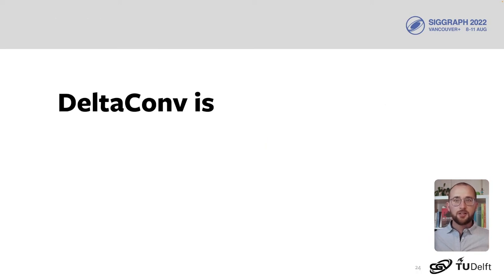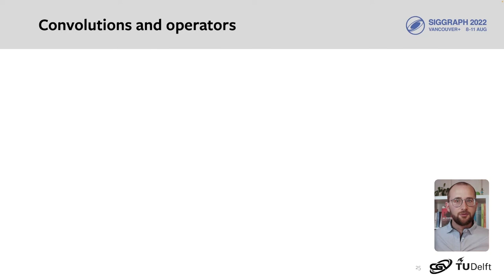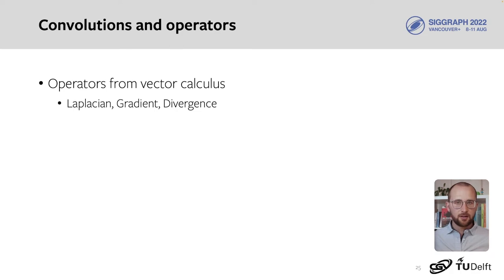In this talk, we're introducing DeltaConv, which is anisotropic and intrinsic, working directly on the surface. In DeltaConv, we shift the focus from designing filter kernels to using operators from vector calculus, such as the Laplacian, gradient, and divergence. Such operators are coordinate-independent, which in practice means that the encoding of directional information is abstracted away from the neural network.